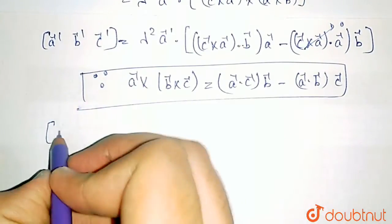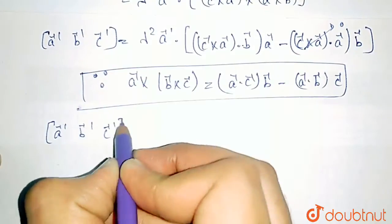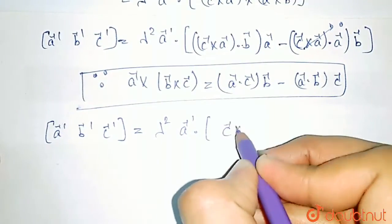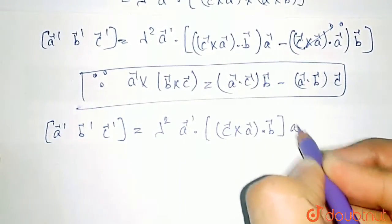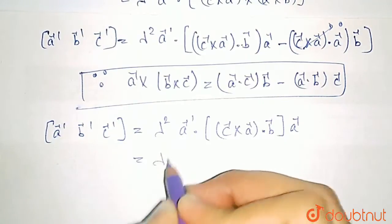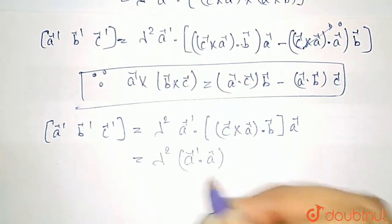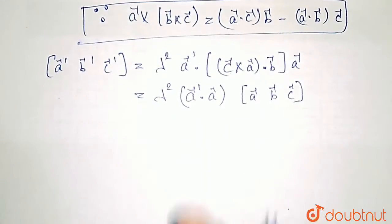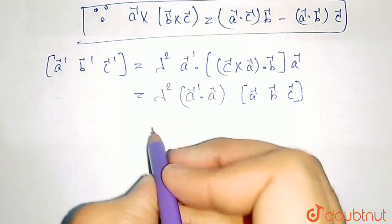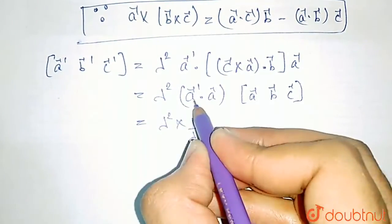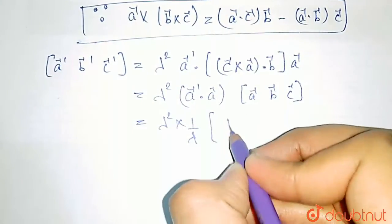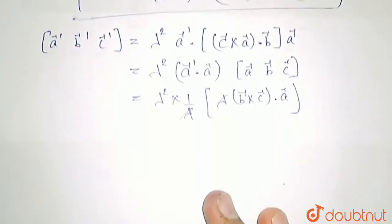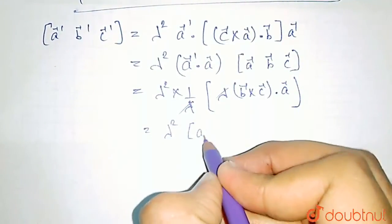So we are only left with: the scalar triple product of A', B' and C' equals lambda squared times A' vector dot (C cross A dot B) times A vector. This (C cross A dot B) is a constant — it is equal to the scalar triple product of A, B, C again. The scalar triple product of A, B, C we have assumed to be 1 by lambda. So this becomes lambda squared into 1 by lambda. Substituting the value of A' here: A' is lambda times B cross C dot A vector, so this lambda will get cancelled and we get lambda squared times the scalar triple product of A, B and C.